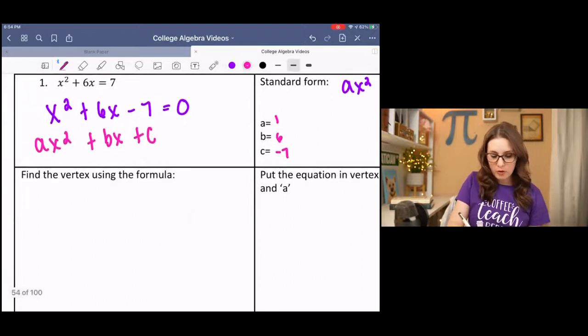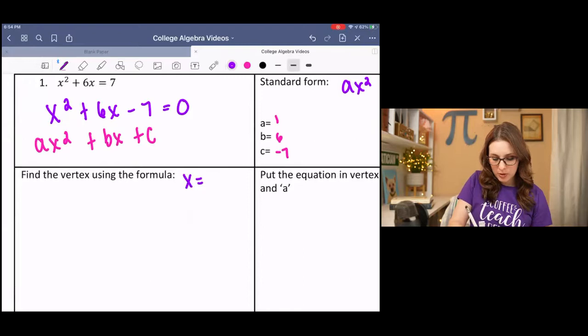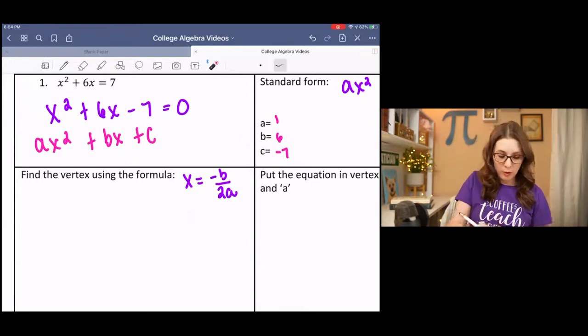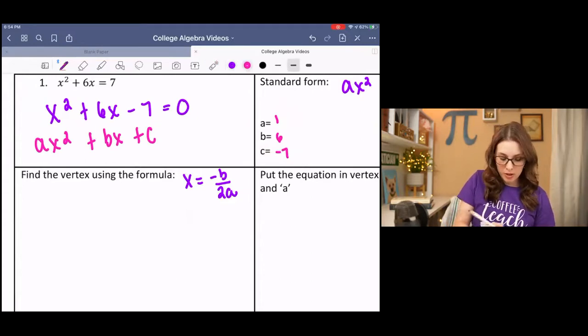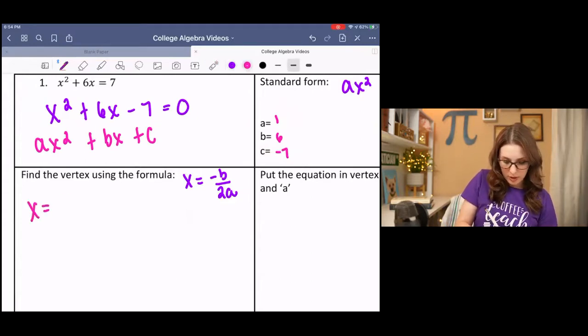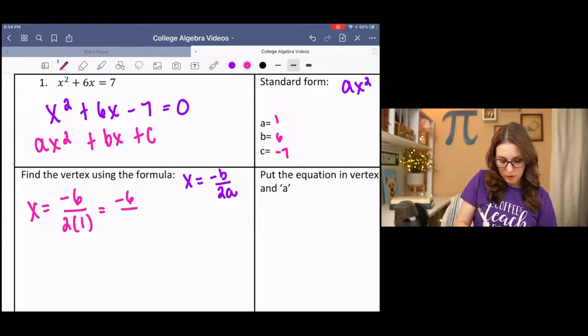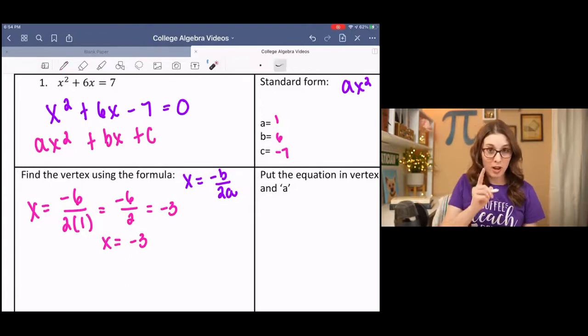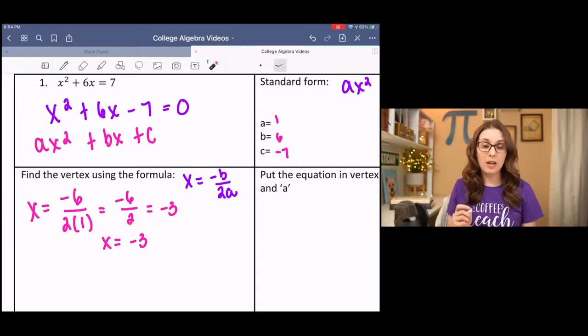The formula for finding the vertex is x equals negative b over 2a. Since we already identified b and a, we can plug that into our formula to find the x coordinate of our vertex. So negative b, which is 6, over 2 times a, which is 1. Negative 6 over 2 is negative 3. So the x coordinate is negative 3. This is not only the x coordinate of the vertex, but also the axis of symmetry. So if you have been asked to find an axis of symmetry, the equation of the line for the axis of symmetry, this is that.